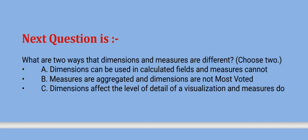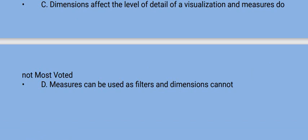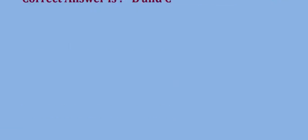Next question is: what are two ways that dimensions and measures are different? Choose two options. The options are option A dimensions can be used in calculated fields and measures cannot, option B measures are aggregated and dimensions are not, most voted, option C dimensions affect the level of detail of a visualization and measures do not, most voted, and option D measures can be used as filters and dimensions cannot. The correct option is option B and C.